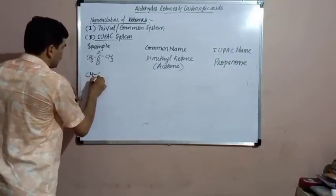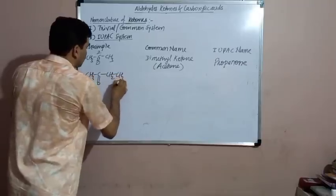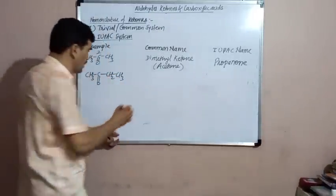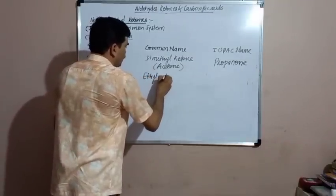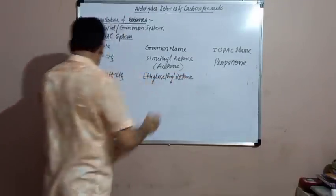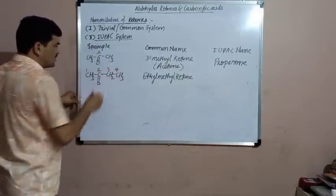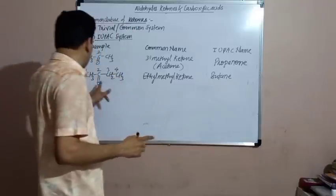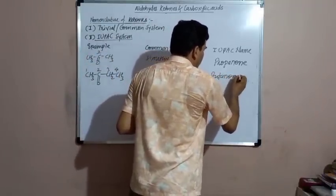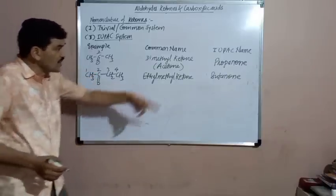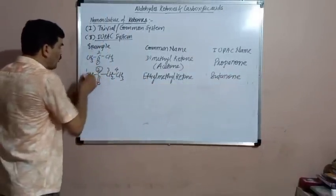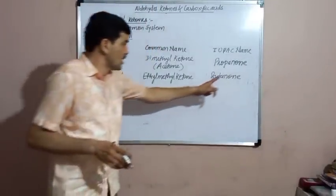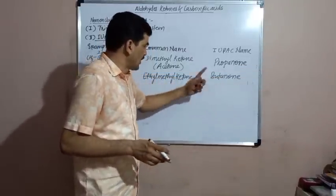The next example: CH₃-CO-CH₂-CH₃. In this ketone, the two alkyl groups are dissimilar. The trivial name is obtained by writing the names of the two alkyl groups in alphabetical order: ethyl is written first, then methyl, then ketone — so the trivial name is ethyl methyl ketone. For the IUPAC name, the longest chain contains 4 carbon atoms, so the parent alkane is butane. The ending '-e' is replaced by '-one.' Again, the position of the keto group is not compulsory here because the keto group will certainly be at position number 2, so the IUPAC name is simply butanone.